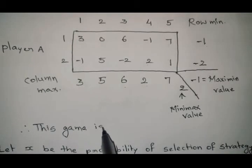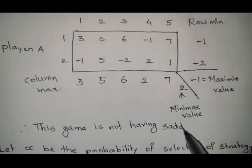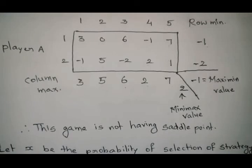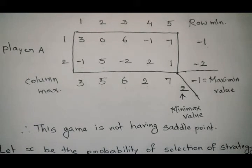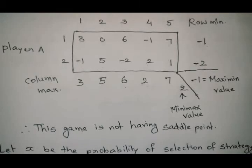The maximin value is -1 and the minimax value is 2. Since they are not equal, this game does not have a saddle point. We can solve it by dominance principle, but here we are required to solve it by graphical method.